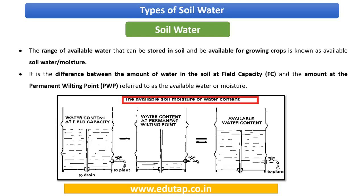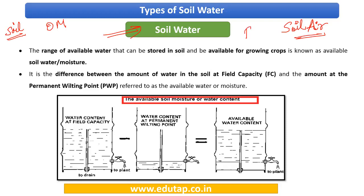Coming to soil water — we need to understand that soil has four major components: mineral particles, organic matter, soil water, and soil air. In this session, we are going to focus on soil water. Soil water and soil air both occupy the pore spaces, that is the space available between the particles.